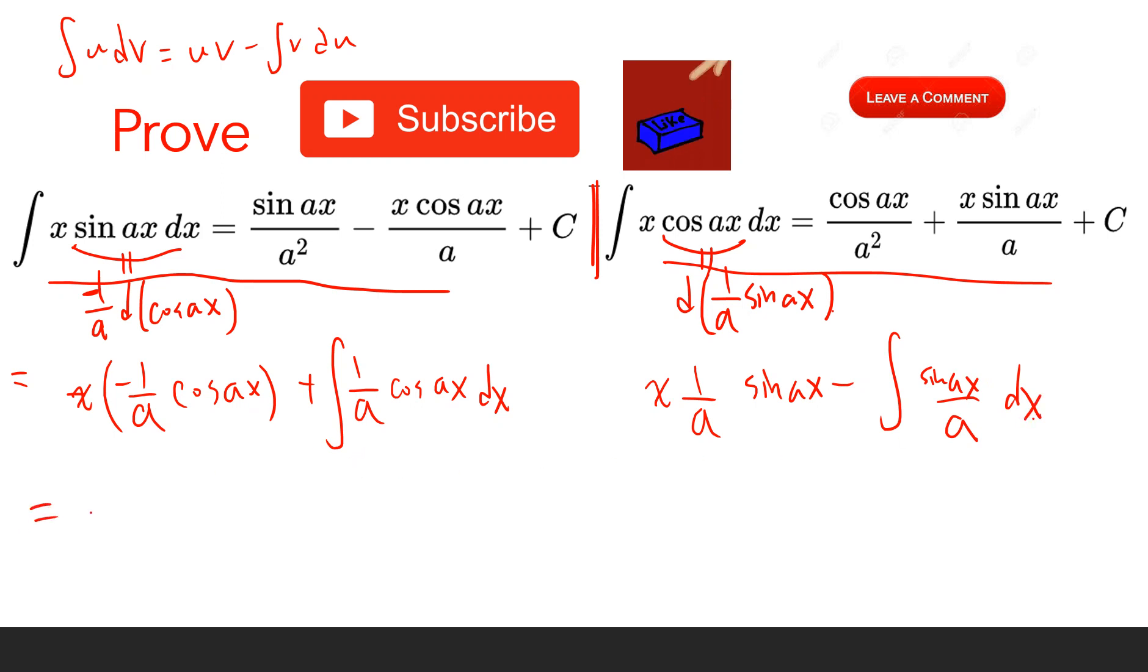This gives us -1/a times x cos ax plus the integral of 1/a cos ax dx. The integral of cosine is sine, so we get -1/a x cos ax + 1/a² sin ax + C.